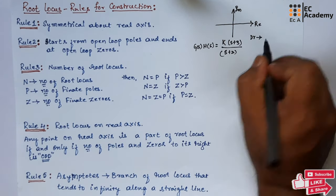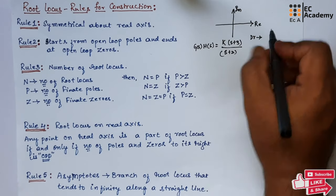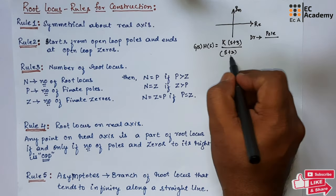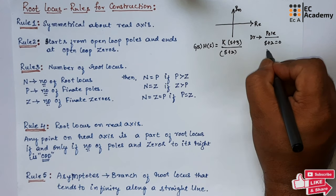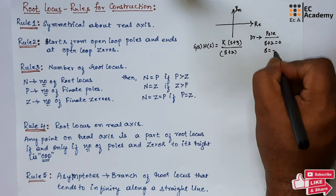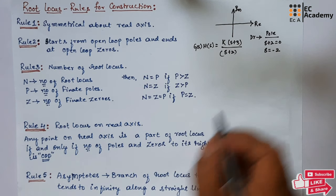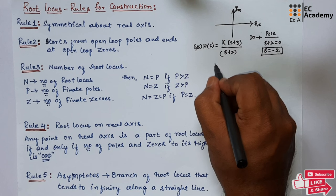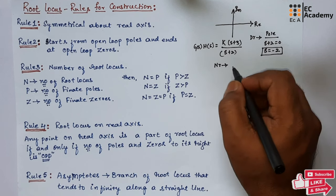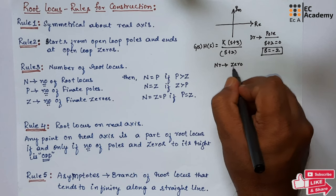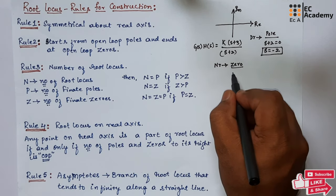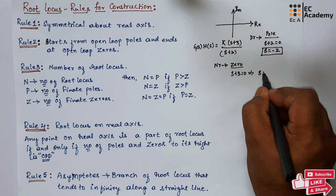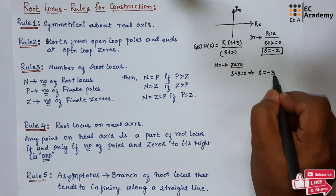Here, if we take the denominator term, that will represent the pole. So if we take S + 2 = 0, S will be equal to minus 2. If we take S + 3 = 0, S will be equal to minus 3.